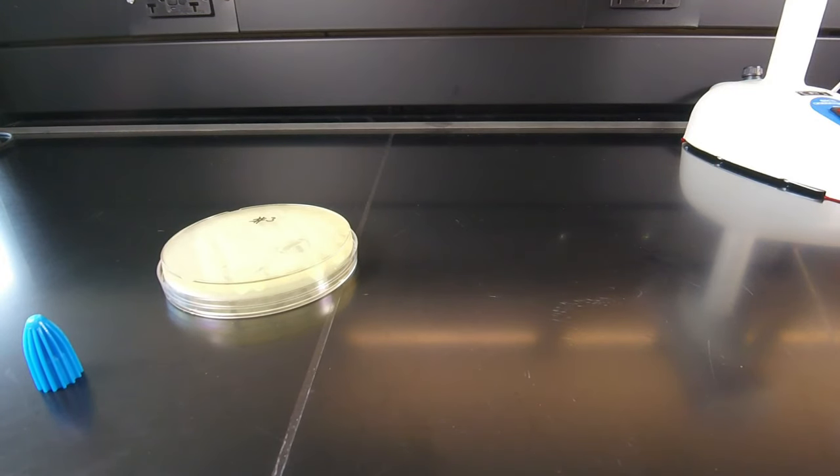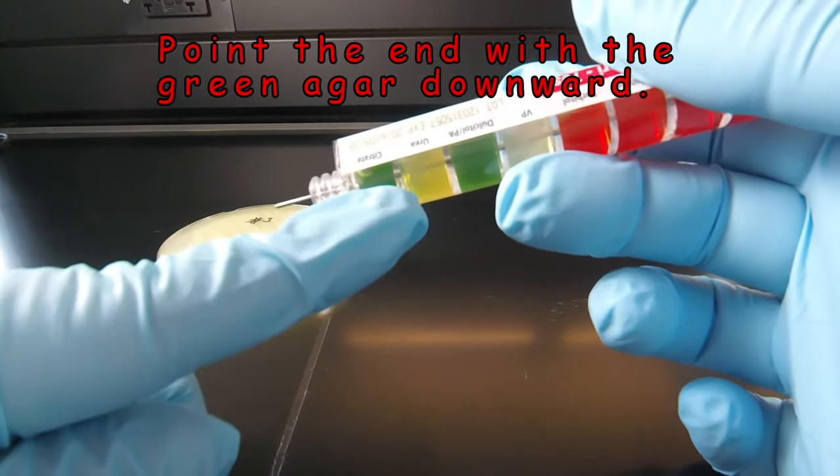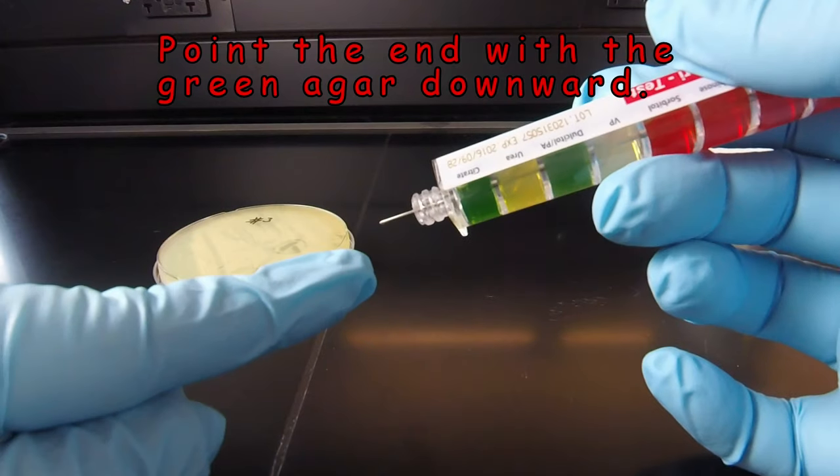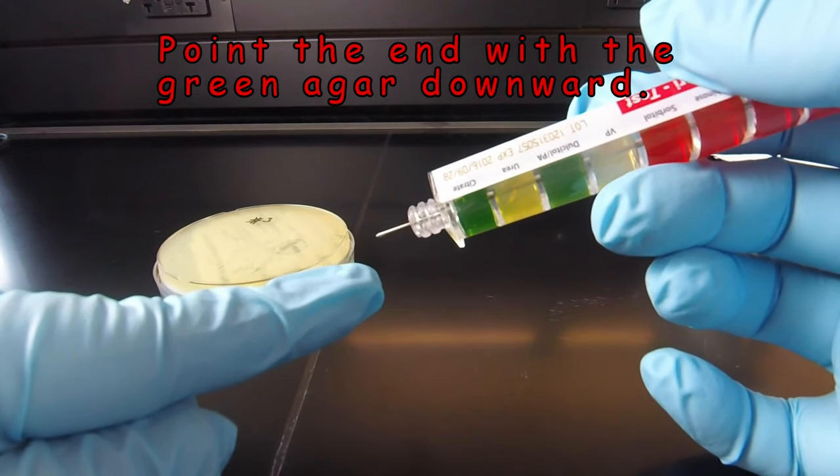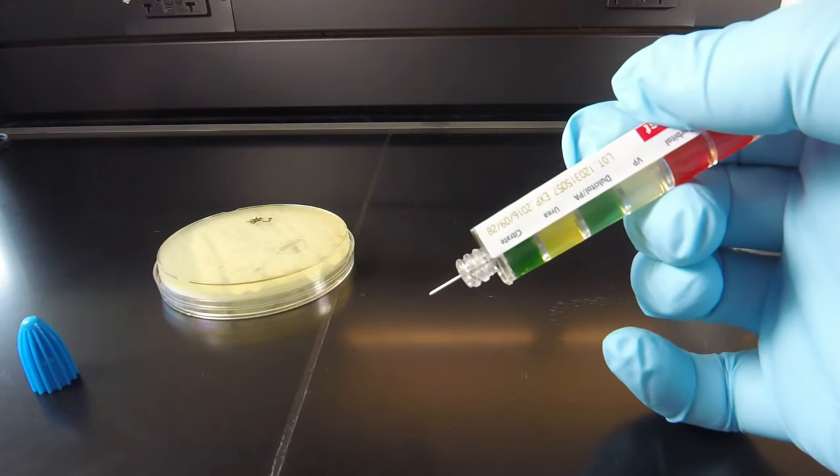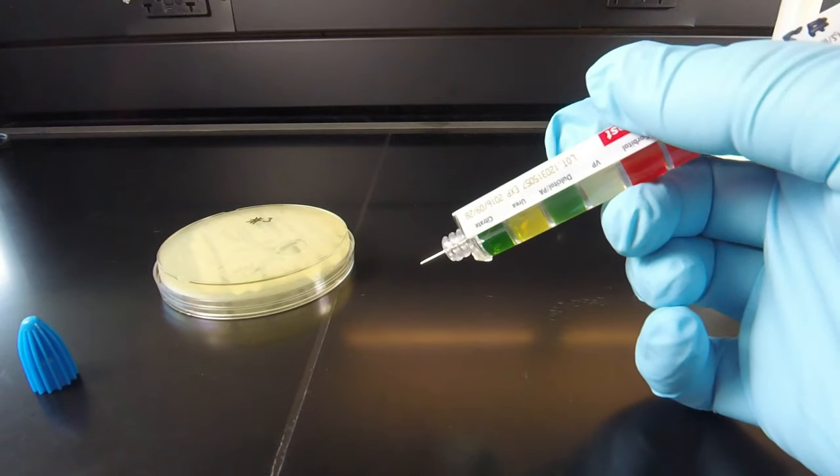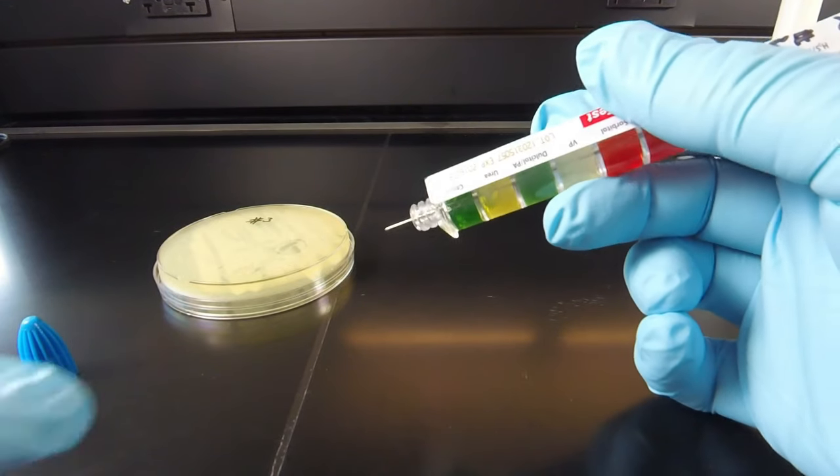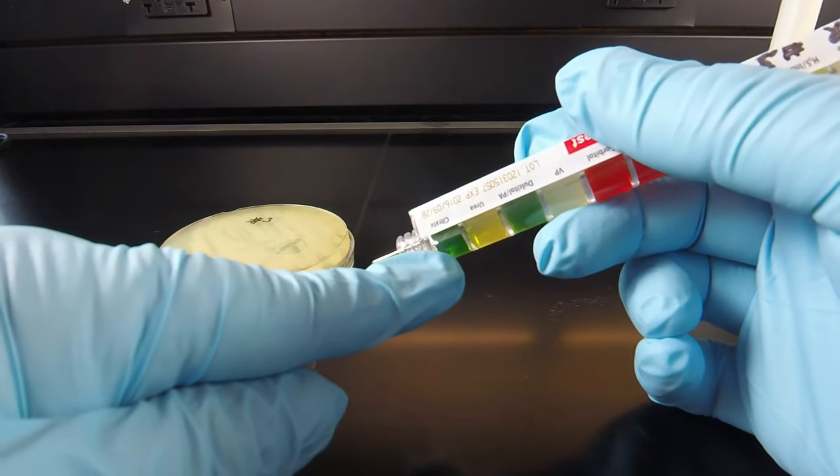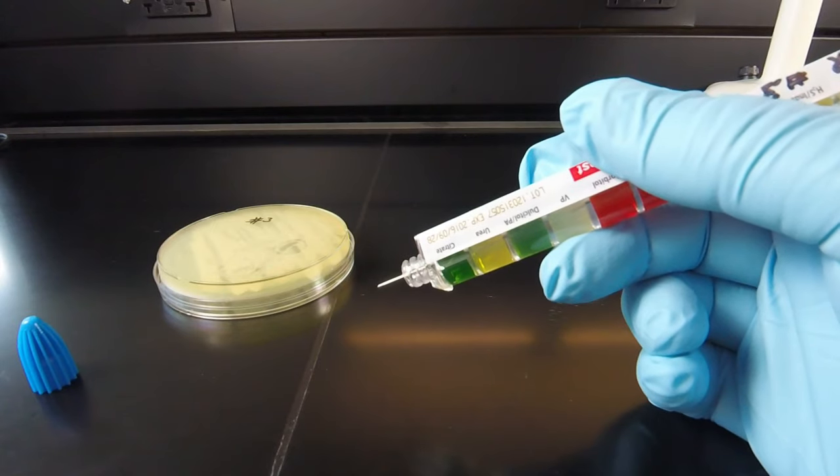To inoculate the Entrapluri test, turn it so that the end with the green agar is facing downward. That has the straight wire with the tip on which we want to place the bacteria. Hold it at about a 45 degree angle, steep enough that when we scrape off bacteria, we get the bacteria on the end of the wire, but we don't touch the plastic and contaminate the outside of the tube.